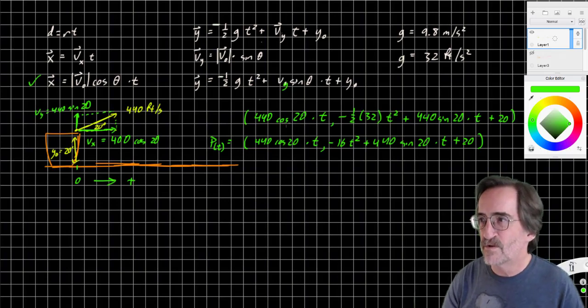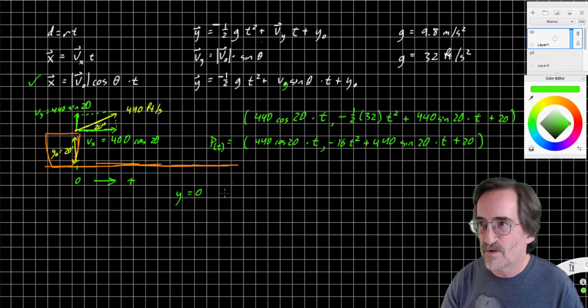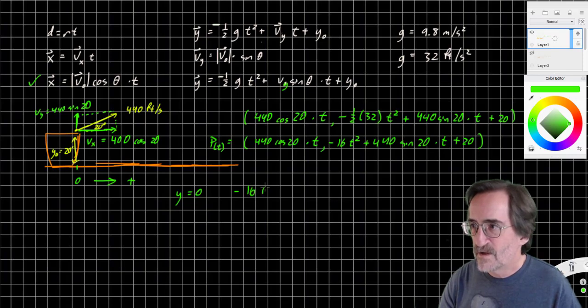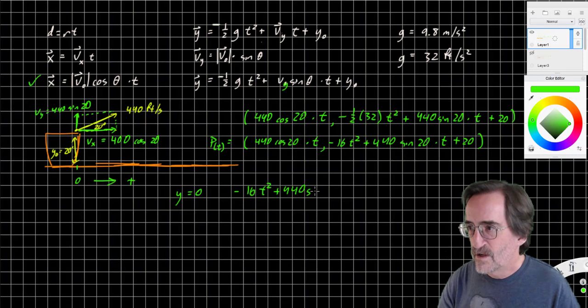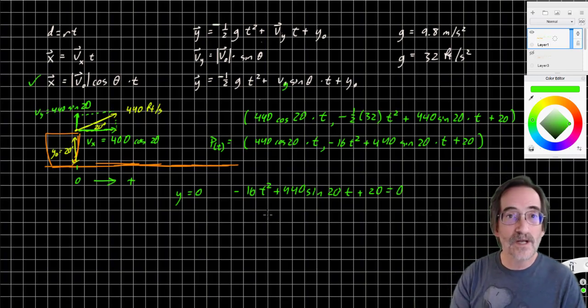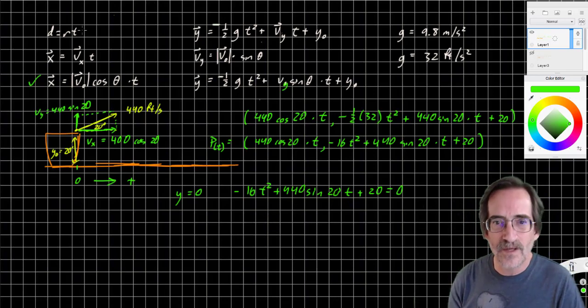Let's answer at least one question here about this. When does it strike the ground? The height, the y position, is 0 when it strikes the ground. So let's solve the initial position here. Negative 16 T squared plus 440 sine 20 T plus 20 equals 0. And we can solve that using the quadratic equation. Let's do that. And that will be the last thing we'll do here.